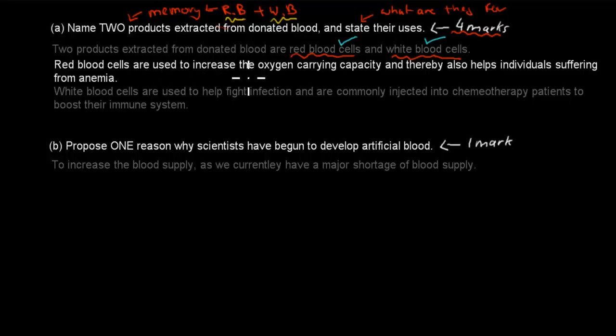Red blood cells are used to increase the oxygen-carrying capacity and thereby also helps individuals suffering from anemia. So by increasing, because obviously the hemoglobin is in red blood cells, it increases the oxygen-carrying capacity, which means we can carry more oxygen. And because of this, it helps individuals suffering from anemia.